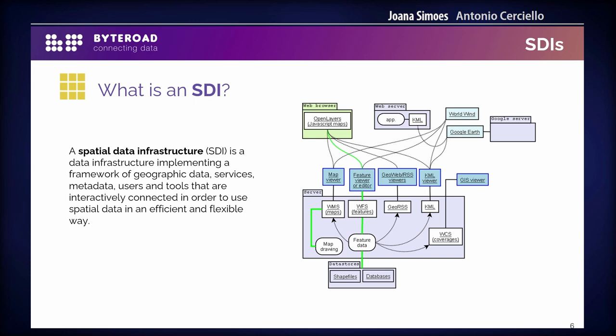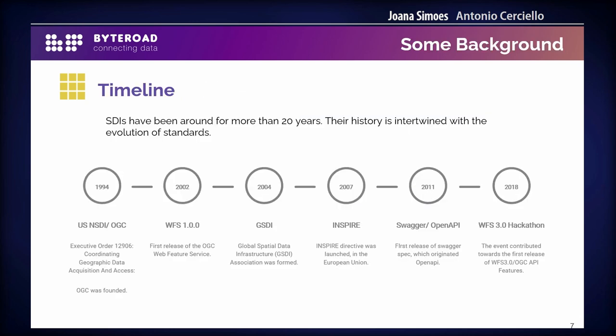The whole idea is that they are all connected in a smooth way and make the use of spatial data efficient. SDIs have been around for a very long time. We can think about the beginnings of SDIs in the early 90s. In 1994, there was an order in the United States to coordinate the acquisition of geographic data. At the same year, OGC — the Open Geospatial Consortium — was founded; not a coincidence. And then we have seen many standards deriving from OGC.